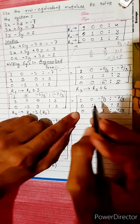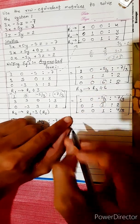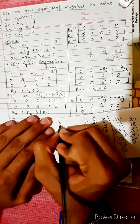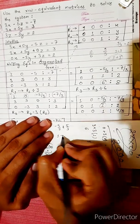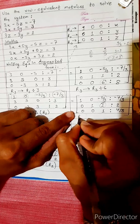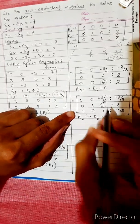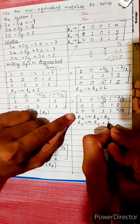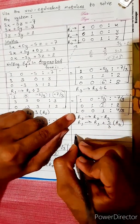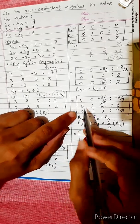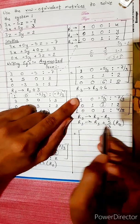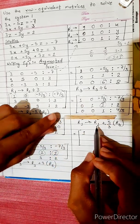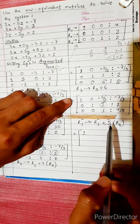Now we perform back substitution. We need zeros above the third pivot. R1 changes into R1 plus (5/3) times R3. We have R1: [1, 0, -5/3 | -7/3] and R3: [0, 0, 1 | 4/3]. So -5/3 + (5/3)×1 = 0, and -7/3 + (5/3)×(4/3) = -7/3 + 20/9.